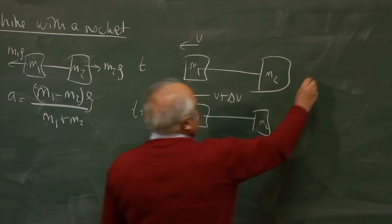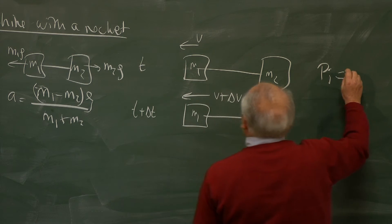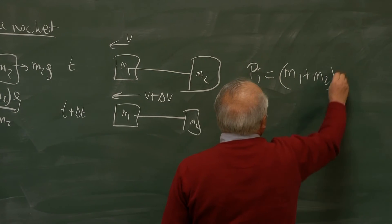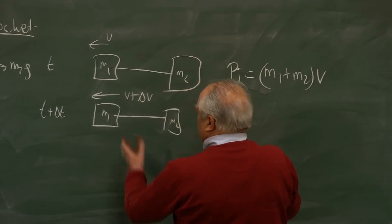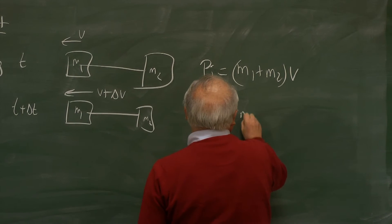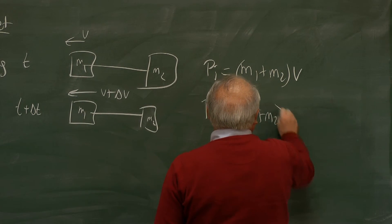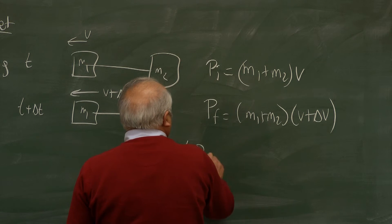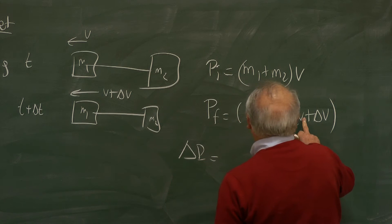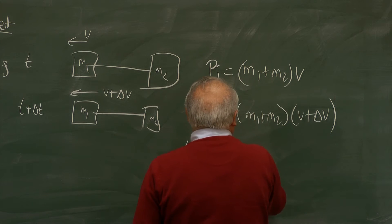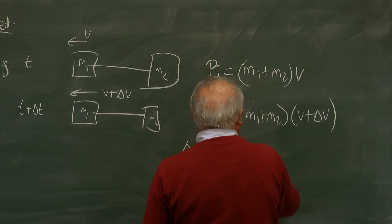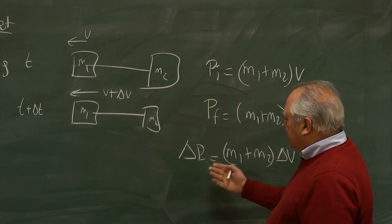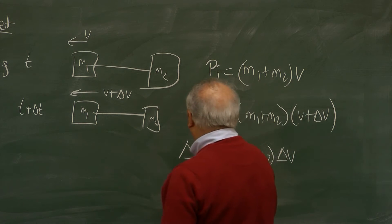So initially the momentum PI is M1 plus M2 times V. Final momentum, now it has a bigger speed, M1 plus M2 times V plus delta V. Therefore the change in the momentum. The V's will cancel. So it is M1 plus M2 times delta V. And the change of momentum per unit time is the force. So let me just divide by delta T.